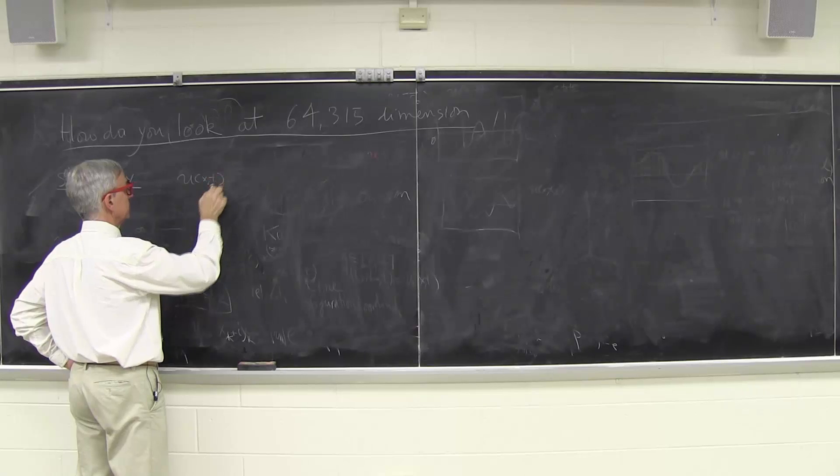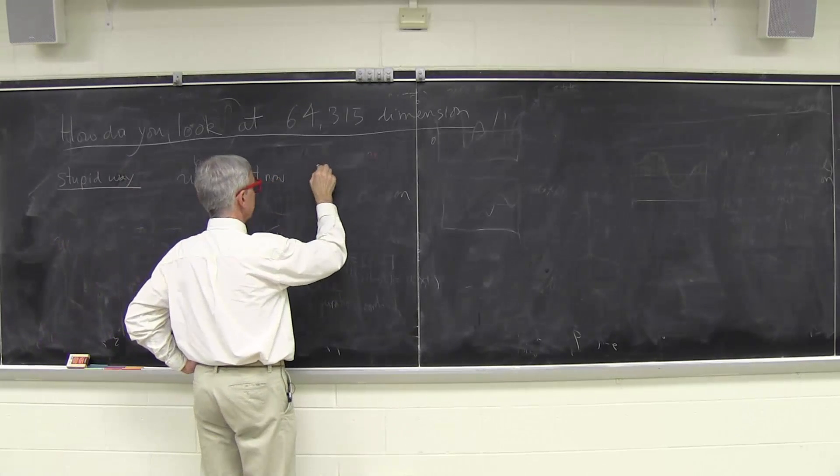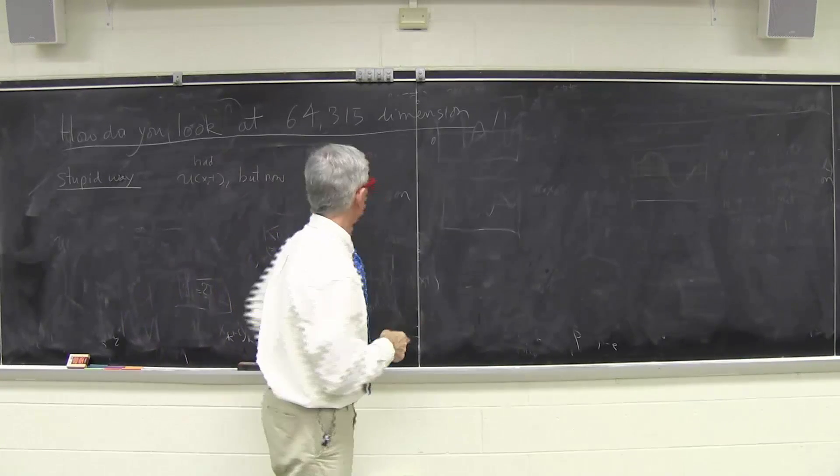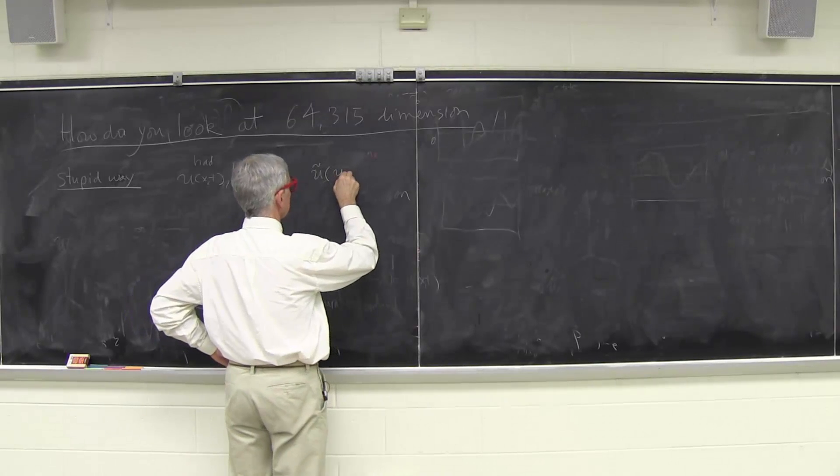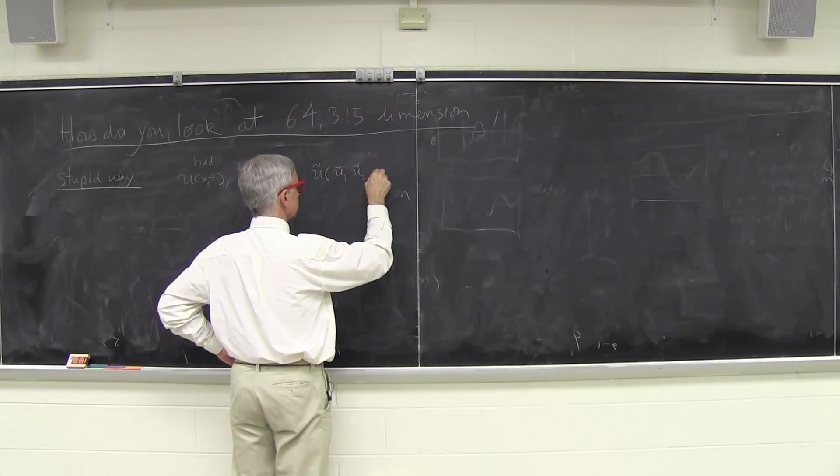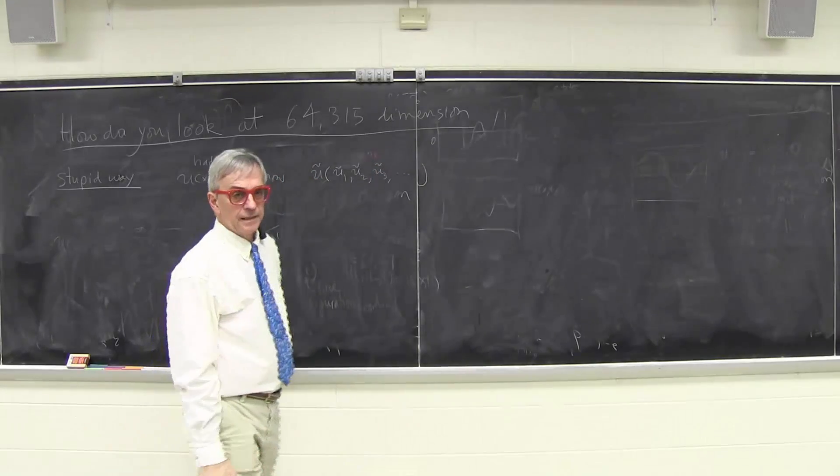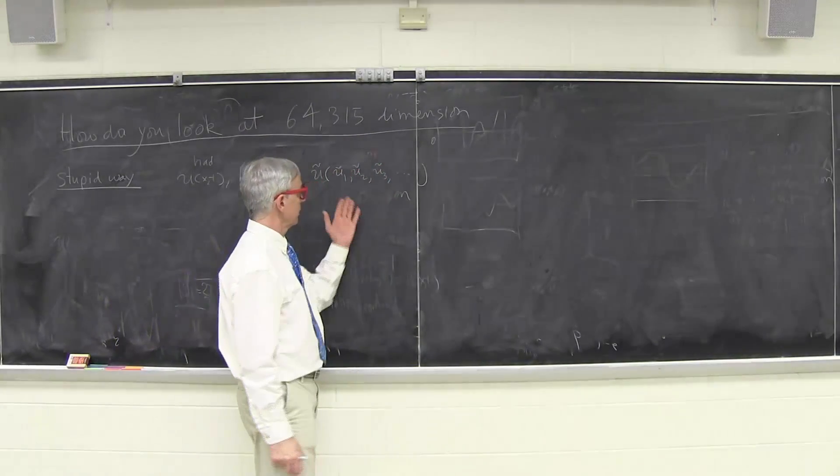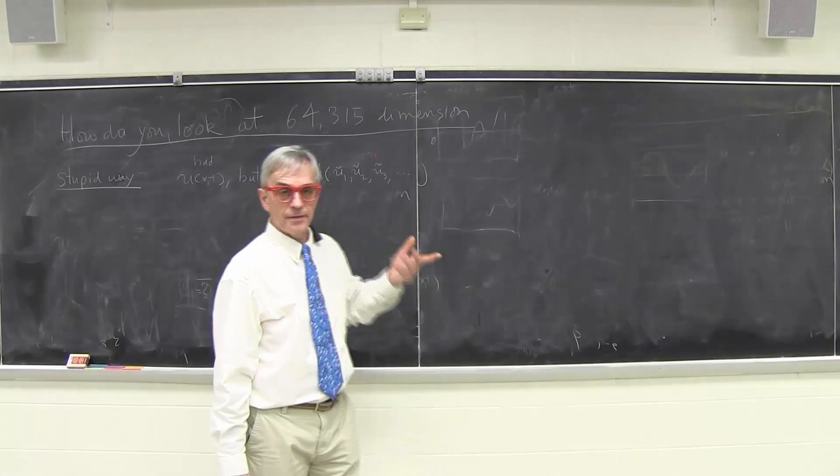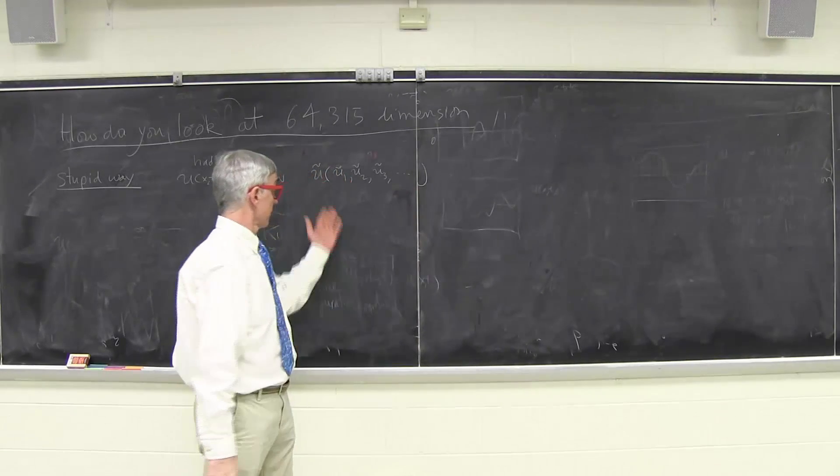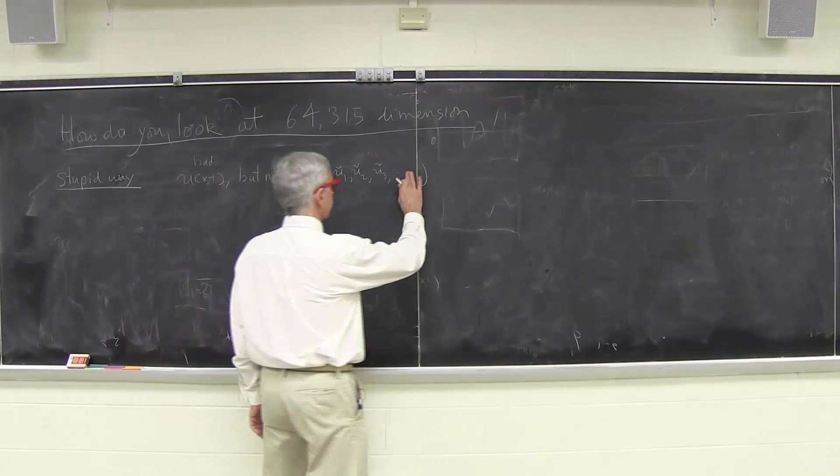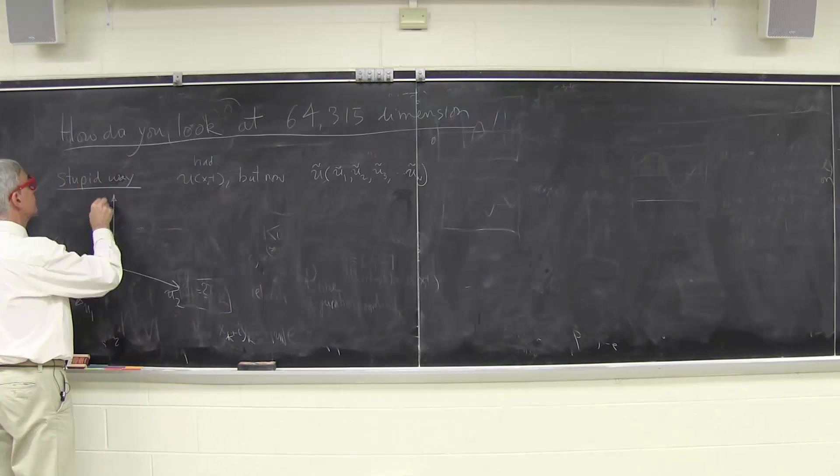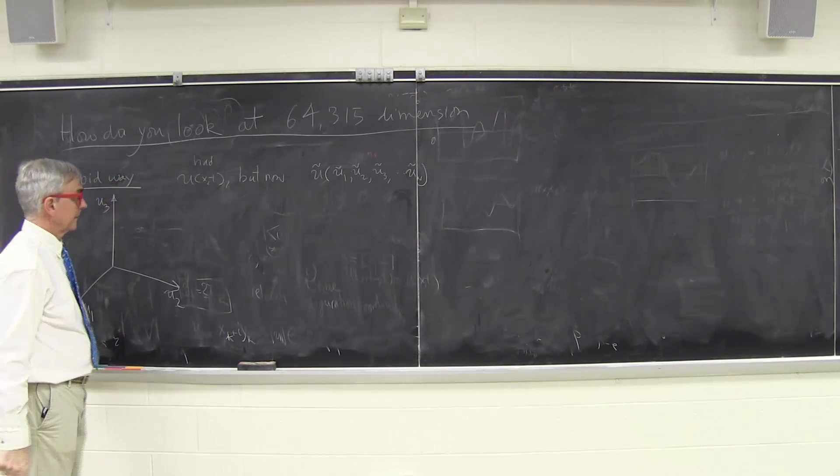I had u of x of t. Now I have u tilde, a vector meaning a finite collection of numbers, and I'll label them u tilde 1, u tilde 2, u tilde 3. They were obtained either Fourier way or Euler way, some discretization of the original problem. Spectral methods, which is the Fourier way, are more intelligent for some problems, but they're obtained in some way and there's some set of them. So what I will do, I'll take first three.